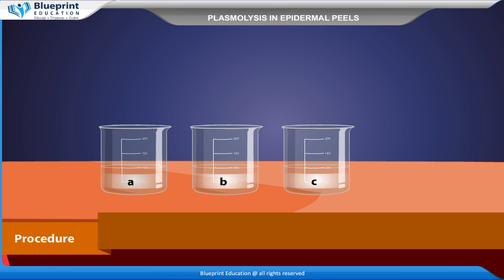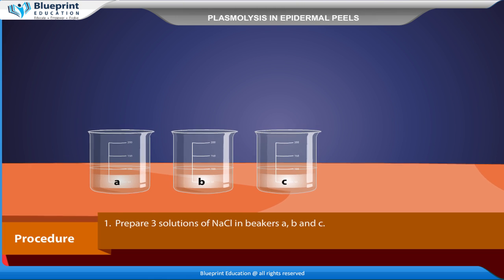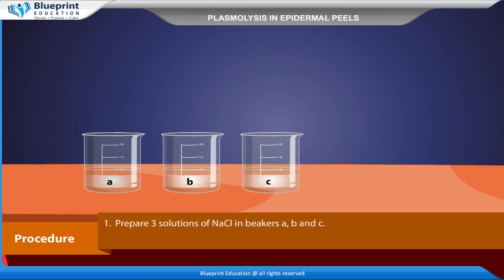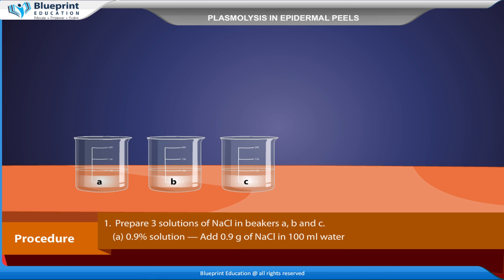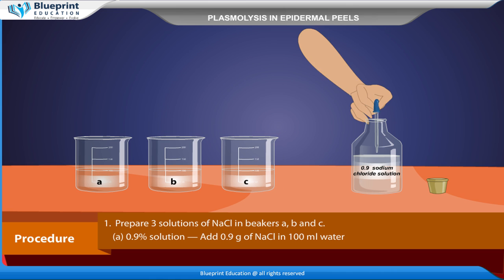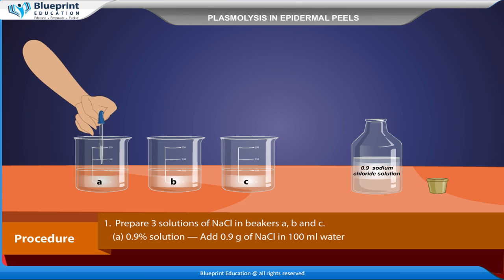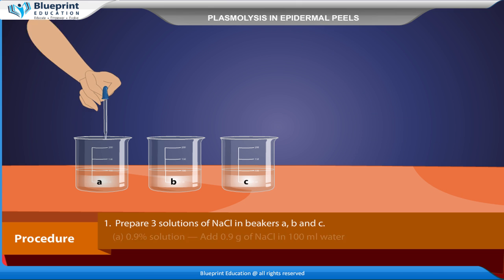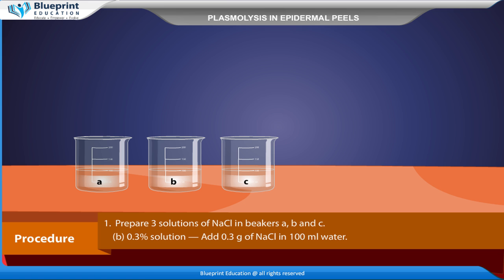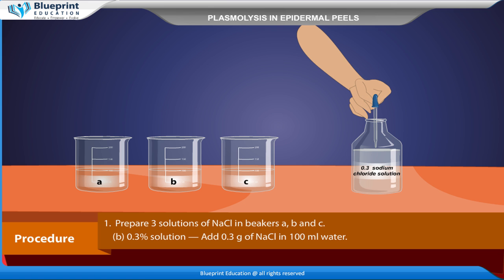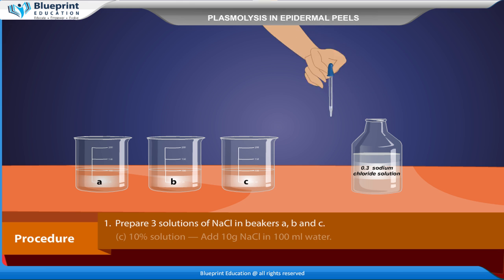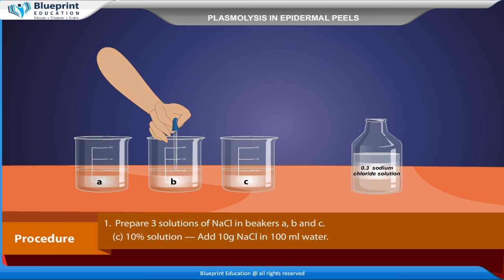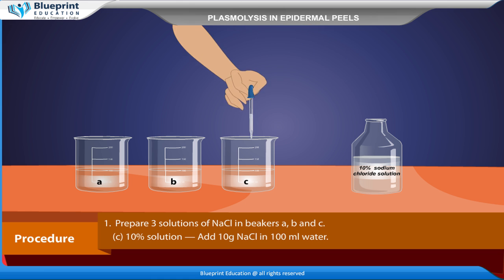Procedure: Prepare three solutions of NaCl in beakers A, B, and C. For the 0.9% solution, add 0.9 grams of NaCl in 100 ml of water. For the 0.3% solution, add 0.3 grams of NaCl in 100 ml of water. For the 10% solution, add 10 grams of NaCl in 100 ml of water.